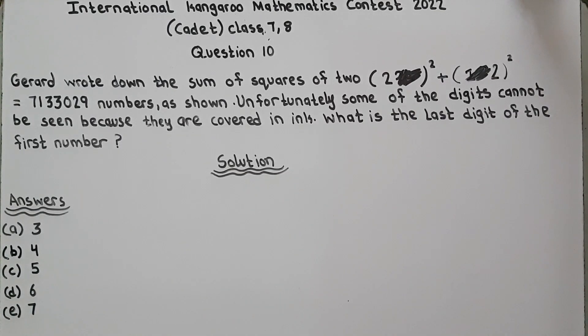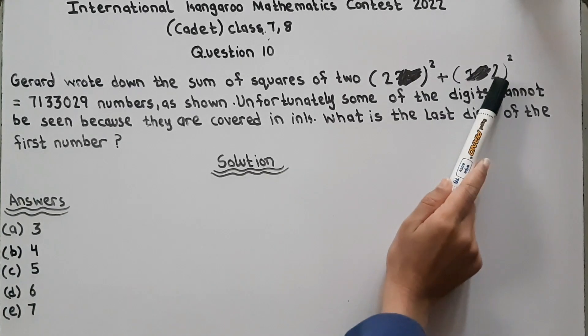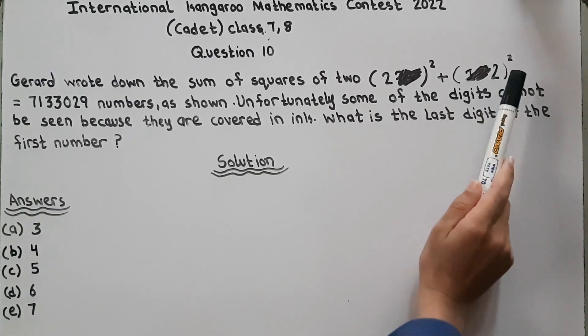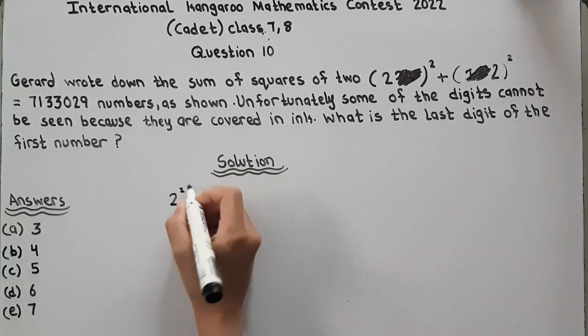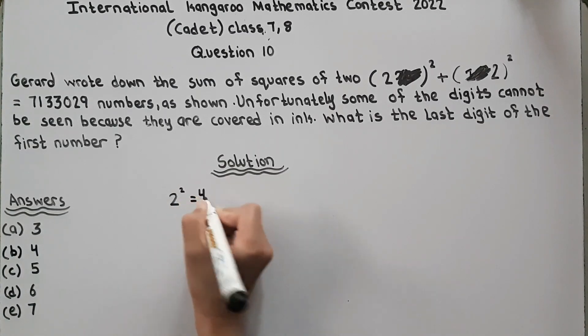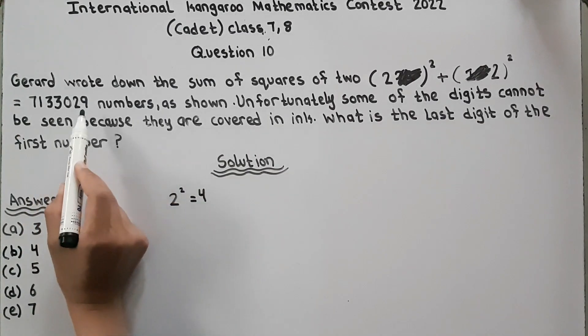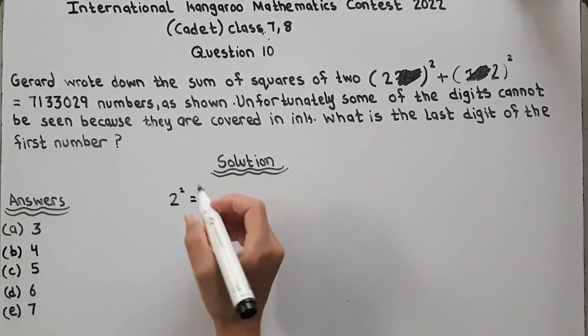It looks a little bit tricky but it is very easy if you read the question carefully. Look, we will take this. We can see the last digit of this. This is 2 and 2 squared is equal to 4 and its last digit is 9. So 4 and 9.